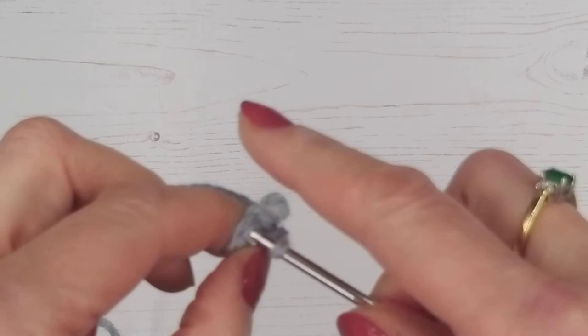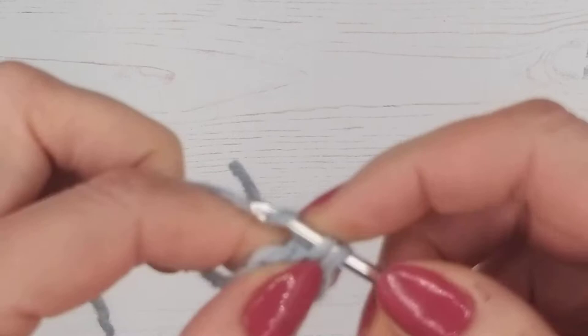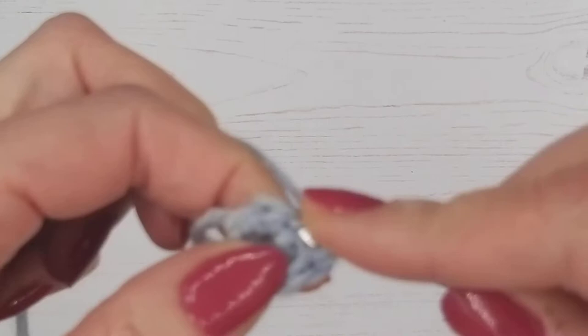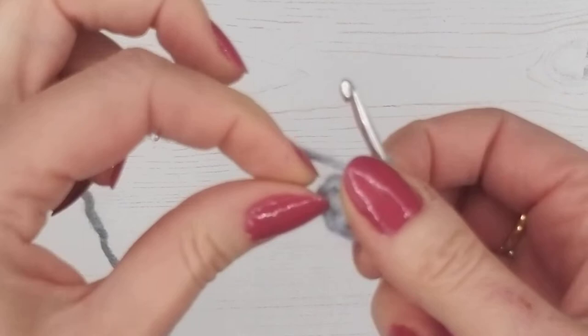So I'm going to be really naughty here and I'm not going to use a marker. I'm just going to count my stitches, but I really recommend you don't do that yourself because when you're learning it's far easier to go wrong. So we're just going to do 24 stitches in total. But if you want to pause the video as you're going along, do your magic circle and the rounds.